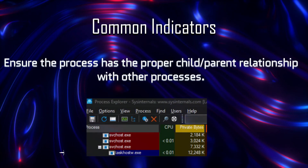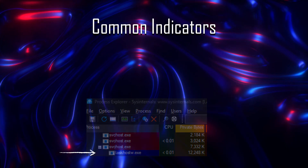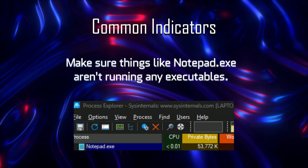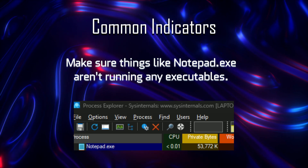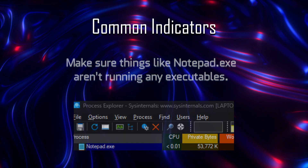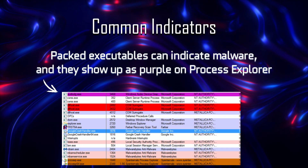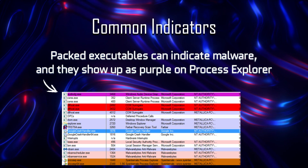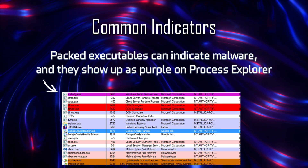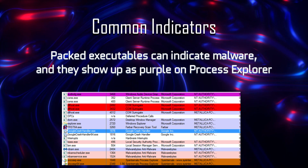Make sure that the process has the right relationship with the proper parent process. Check for any processes hosted by things like notepad.exe and others that shouldn't be running executables. And finally, make sure that the process isn't packed. Packed processes can also be a clear sign of malware. In Process Explorer, these will come up as dark purple.